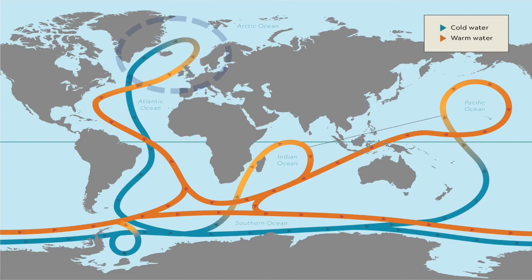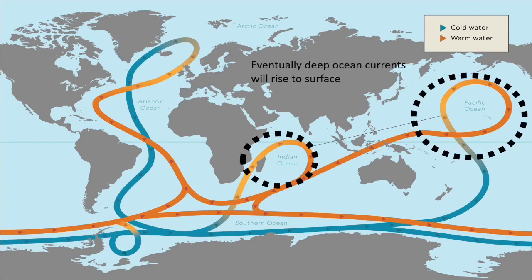The carbon doesn't stay there forever though. Deep ocean currents eventually rise to the surface in areas called upwelling, where surface winds move water out of the way and allow deep ocean water to come up. All that CO2 trapped in the deep ocean is eventually diffused back into the atmosphere. This normally happens in warmer areas near the equator, where warm water can't hold as much CO2 — like a can of Coke on a warm day. So warmer waters mean less downwelling and potentially more CO2 diffusing back into the atmosphere.